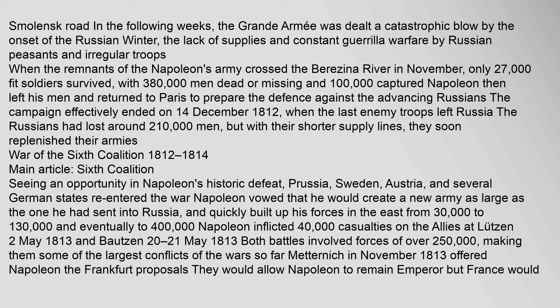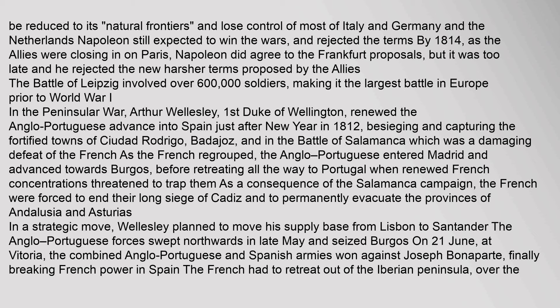Seeing an opportunity in Napoleon's historic defeat, Prussia, Sweden, Austria, and several German states re-entered the war. Napoleon quickly built up his forces from 30,000 to 130,000 and eventually to 400,000. Napoleon inflicted 40,000 casualties on the Allies at Lützen on 2 May 1813 and Bautzen on 20–21 May 1813. Both battles involved forces of over 250,000, making them some of the largest conflicts of the wars so far. Metternich in November 1813 offered Napoleon the Frankfurt proposals — they would allow Napoleon to remain emperor, but France would be reduced to its natural frontiers. Napoleon still expected to win and rejected the terms.